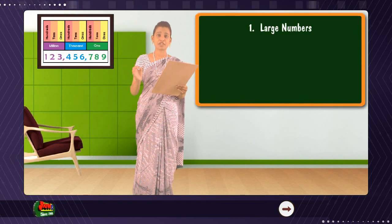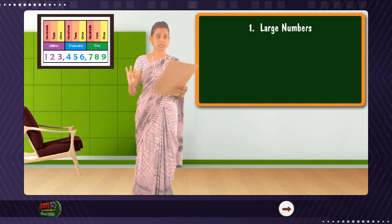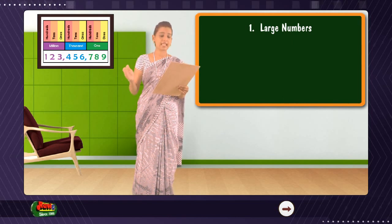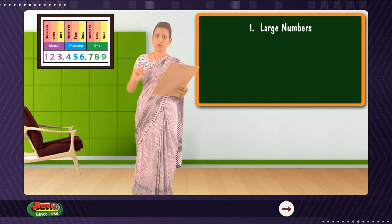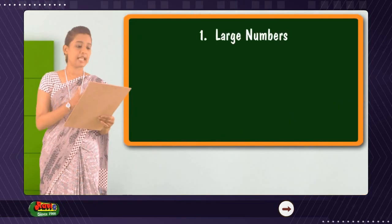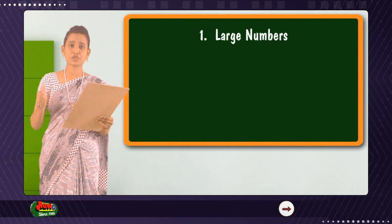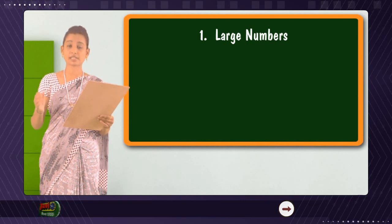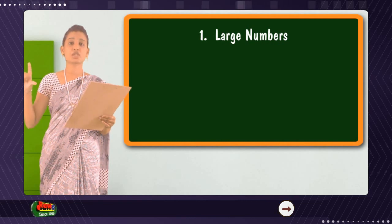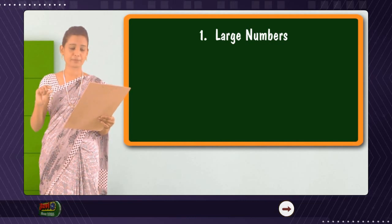Here we use periods like ones, thousands, millions, etc. Numbers are said to be in ascending order when they are arranged from the smallest to the largest number. Numbers are said to be in descending order when they are arranged from the largest to the smallest number.